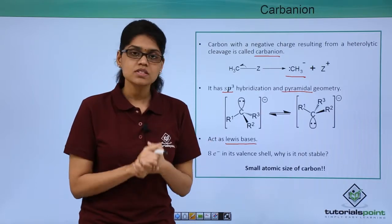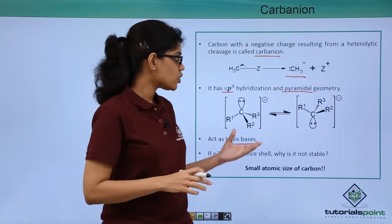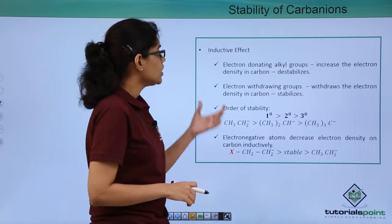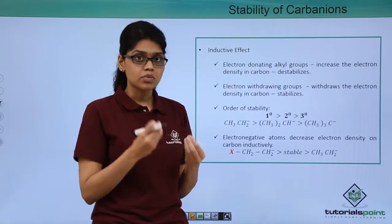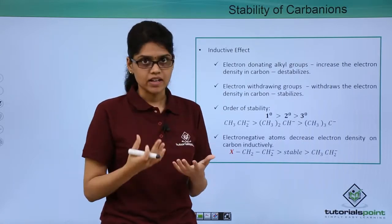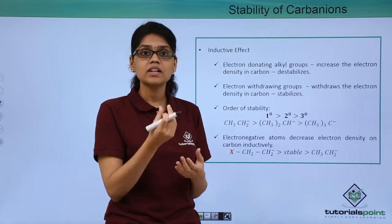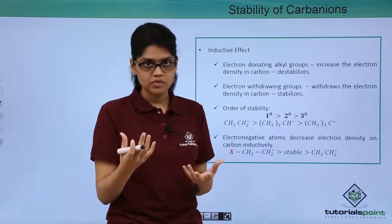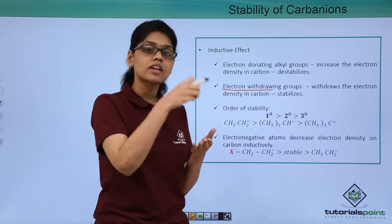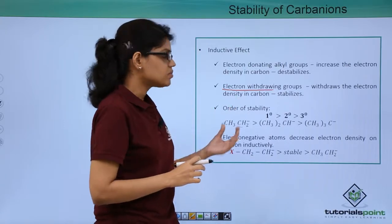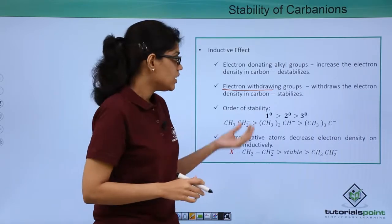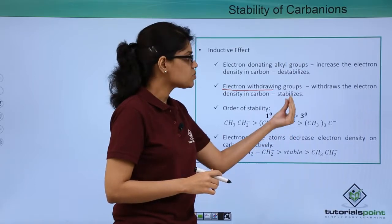Just as we studied the effects that stabilize carbocations, we will now discuss the electronic displacement effects that stabilize carbanions. The first is the inductive effect. Carbanions are highly electron-rich, so electron-donating groups attached to a carbanion increase electron density on carbon, which is unfavorable given carbon's small size. Therefore, electron-withdrawing groups are favored for carbanions, as they withdraw the extra electron density and stabilize the species. For this reason, the order of stability is exactly opposite to that of carbocations: primary carbanions are more stable than secondary, which are more stable than tertiary.